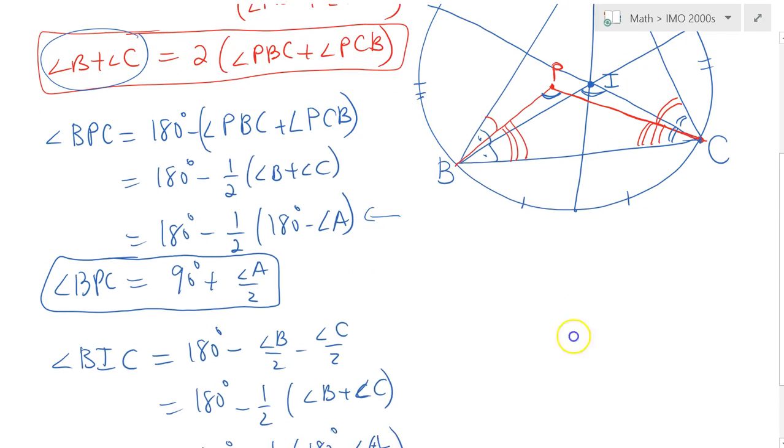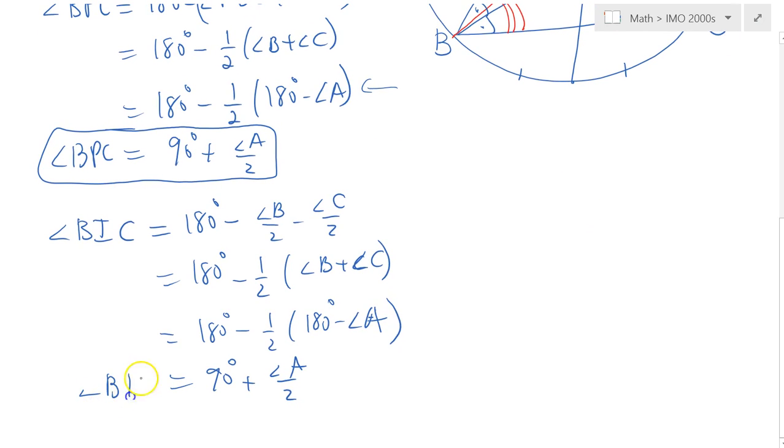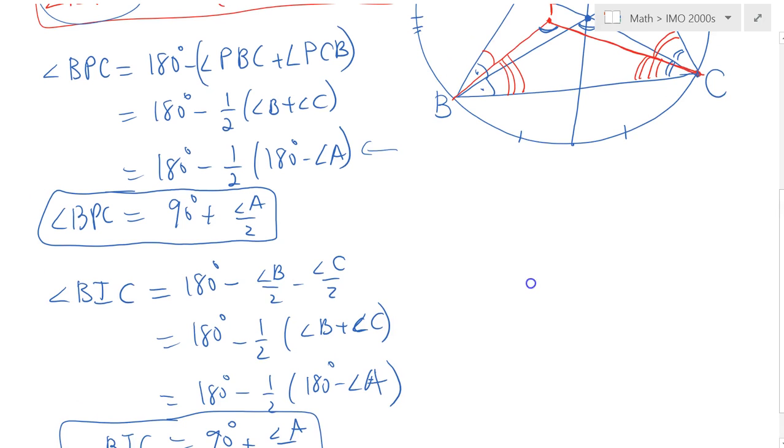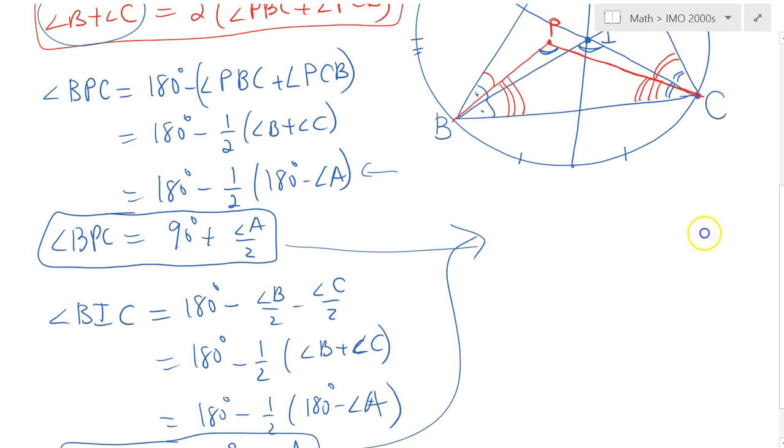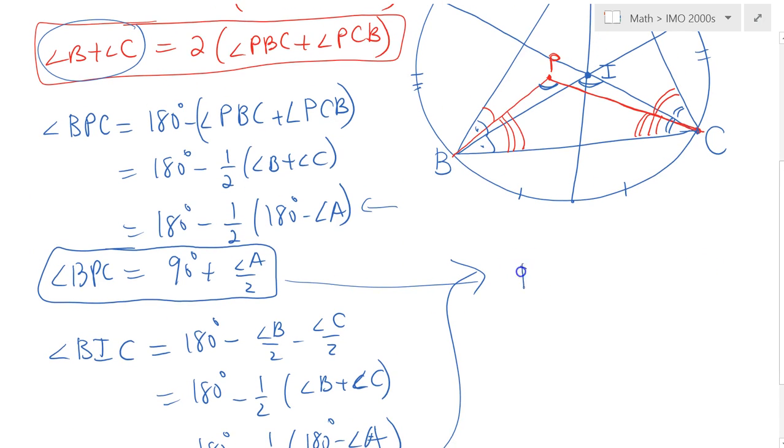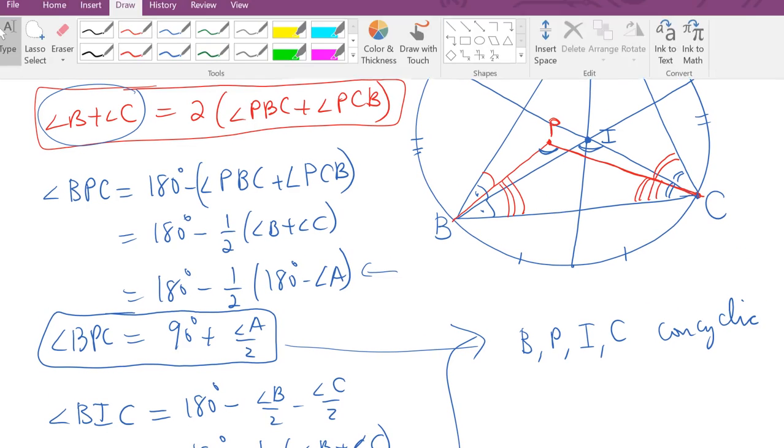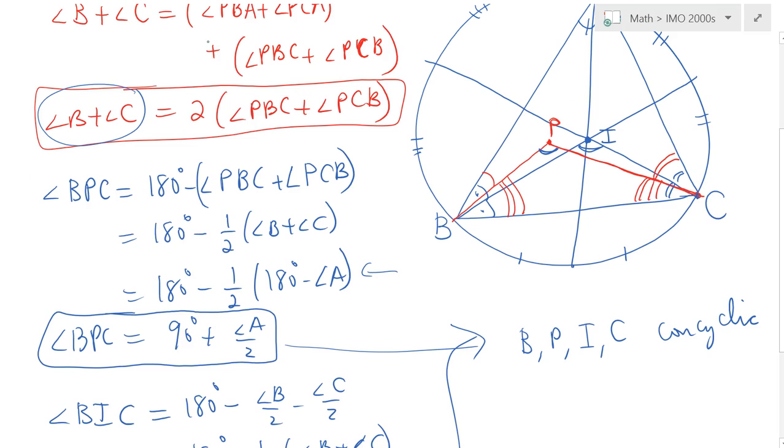What we've got is that these two angles are equivalent. The equivalence of these two angles, angle BPC and angle BIC being equal to each other, would simply imply that quadrilateral BPIC, these points are coincident. Therefore these points lie on a circle. If you wonder what that circle is, you would just remember the incenter excenter lemma, and that would simply be the circle centered at the point at the midpoint of arc BC.